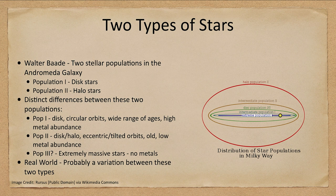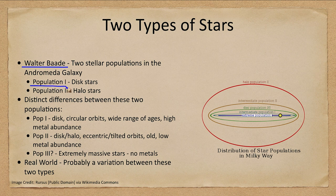These two different types of stars tell us something about the early history of our galaxy. These populations were identified by Walter Baade, who looked at the Milky Way and the Andromeda galaxy and found two different populations. We have Population I — the disk stars — and they can be split further into an extreme Population I, but most disk stars are simply called Population I stars.